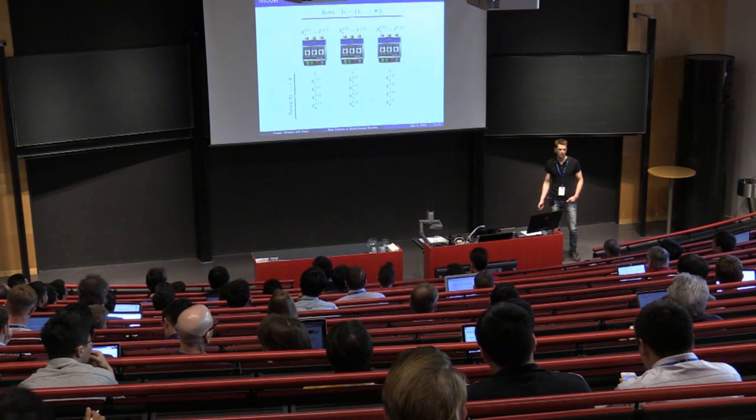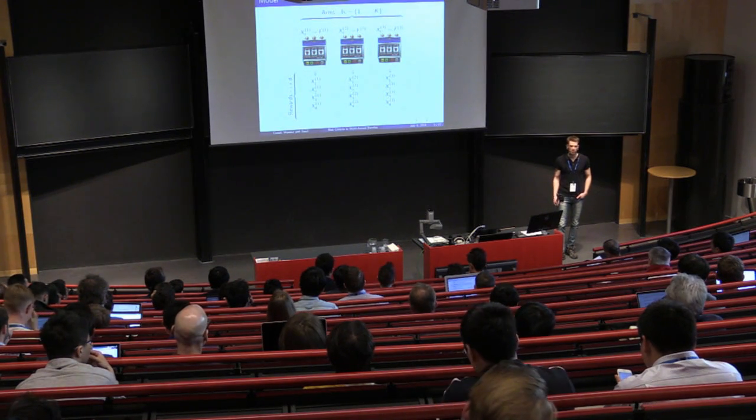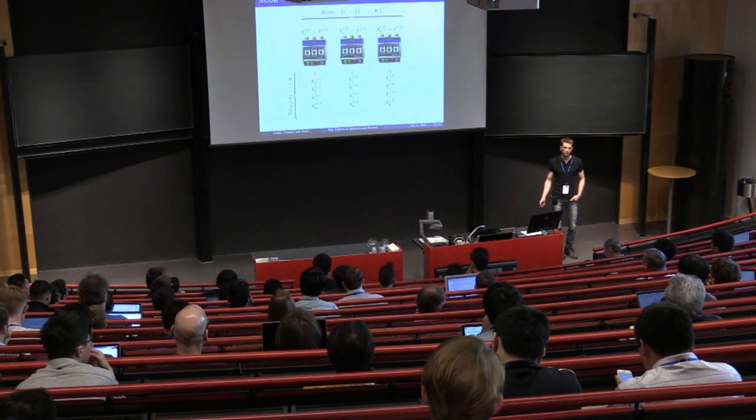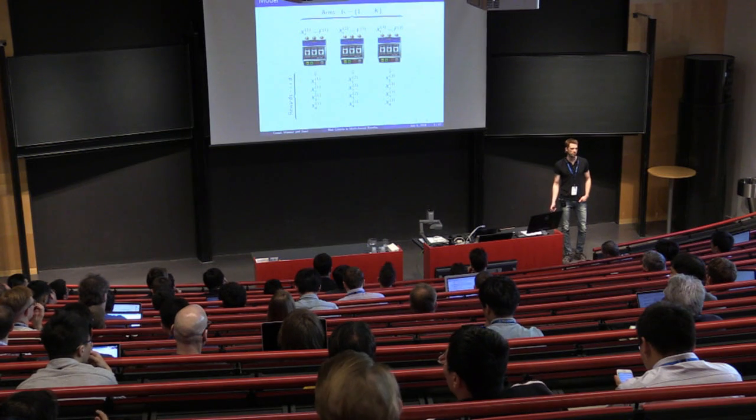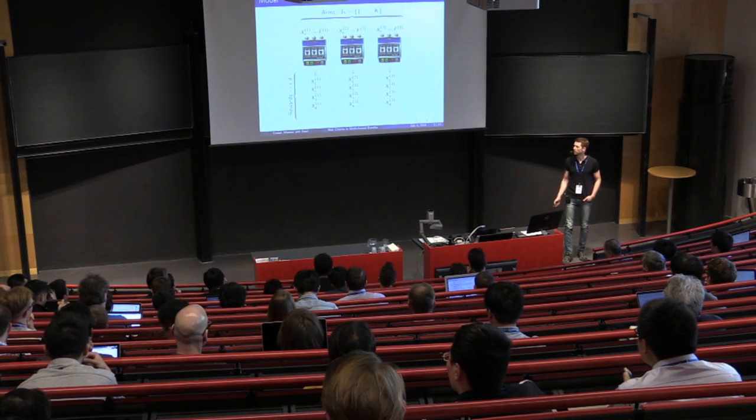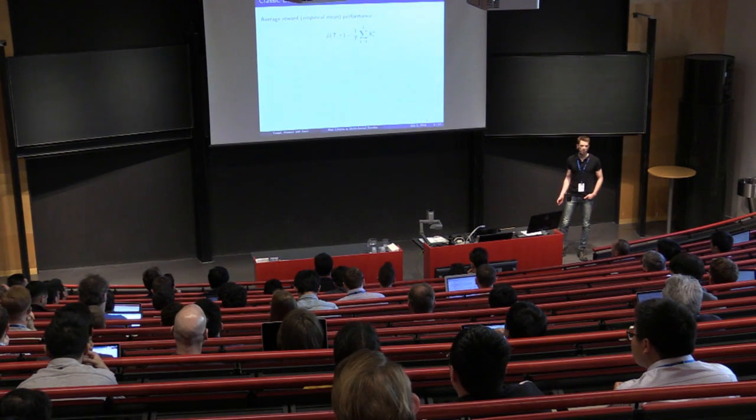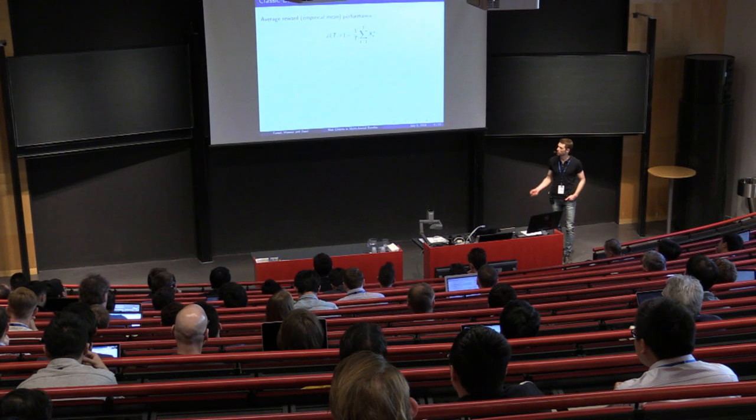This is a classic example of the exploration-exploitation dilemma in which we have a decision maker that needs to sequentially choose between K alternatives. Each alternative is associated with a sequence of IID rewards characterized by distribution function F superscript I. In the classic bandit setting, we want to maximize the expected average reward or empirical mean.